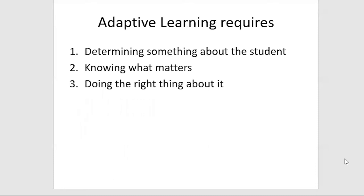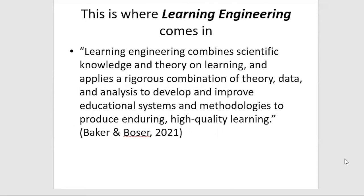Adaptive learning, for instance, requires determining something about the student, knowing what matters, and then doing the right thing about it. That third thing — doing the right thing about it — that's where learning engineering comes in.